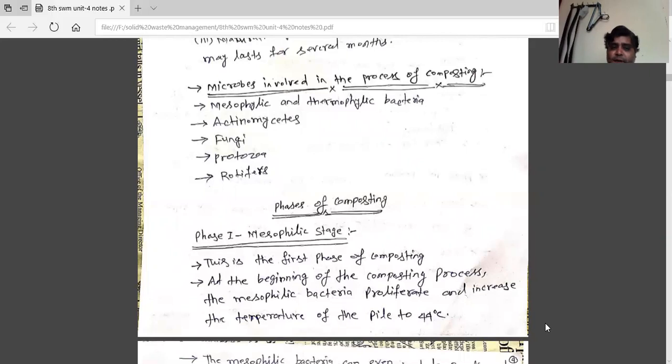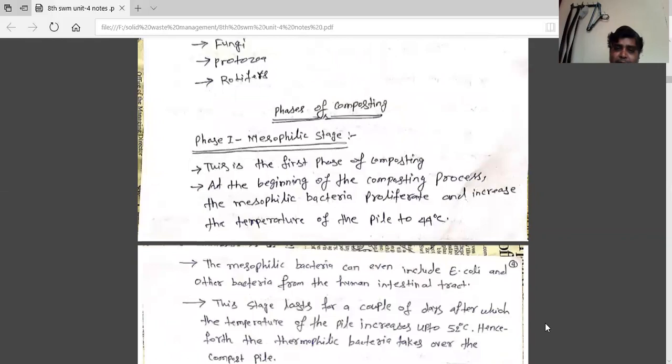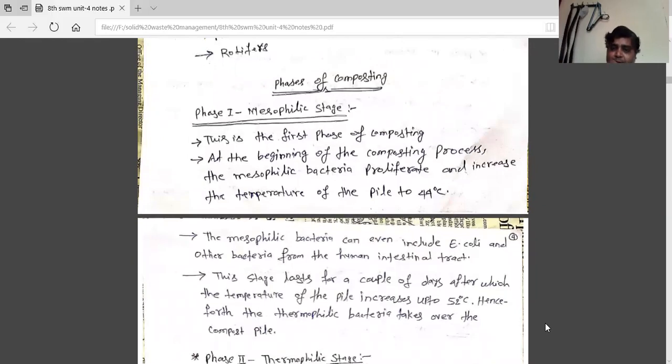Phase one is mesophilic composting. This is the first phase of the composting process. At the beginning, the mesophilic bacteria proliferate and increase the temperature of the pile to 45 degrees. Here, pile means heap.